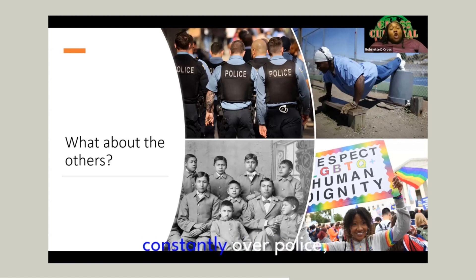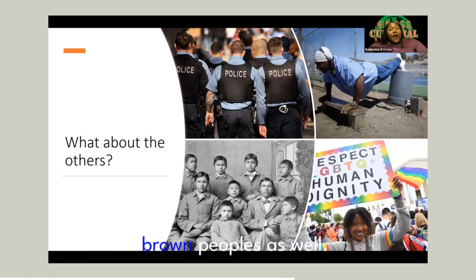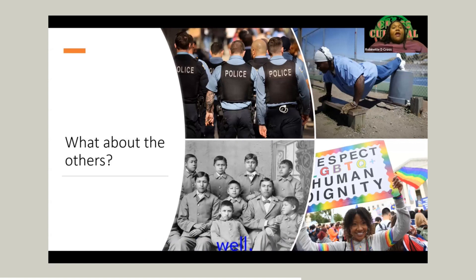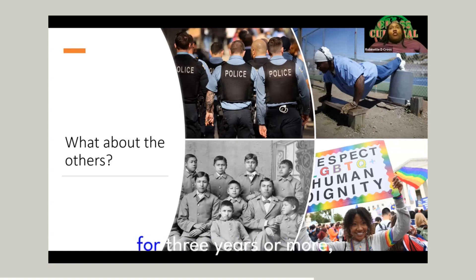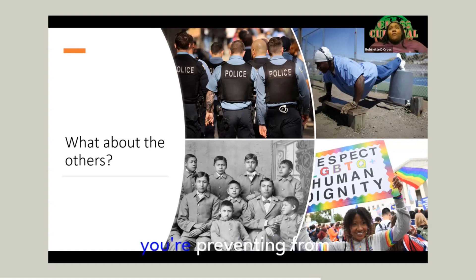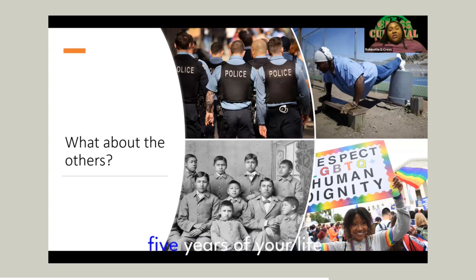There is the fact that they are constantly over-policed — not just African-Americans, but also brown peoples, including descendants of Native Americans. The poverty-to-prison pipeline is excruciating. You can sit in jail waiting on a trial for three years or more, and all that time you are prevented from having a job or access to resources. And if you're found not guilty, you've lost three to five years of your life.